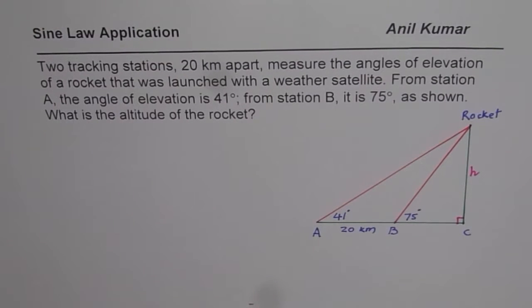I am Anil Kumar and in this video we will explore sine law application. Two tracking stations 20 kilometers apart measure the angles of elevation of a rocket that was launched with a weather satellite. From station A the angle of elevation is 41 degrees, from station B it is 75 degrees as shown.